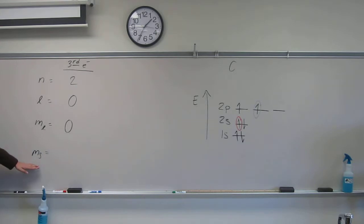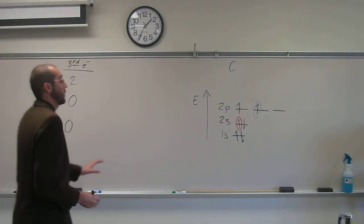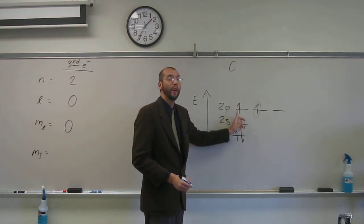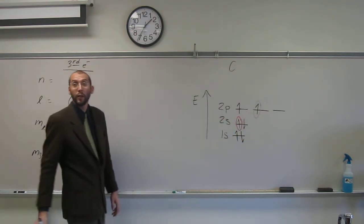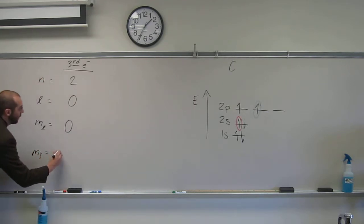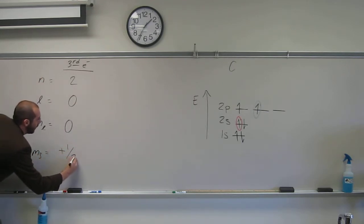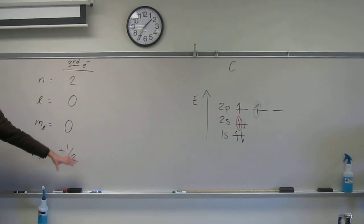So remember, typically we describe the first electron going in the orbital as plus 1 half. So in this case, this was the first electron to go in that orbital. It's pointed up as well, so we'll call that plus 1 half. So that's for the third electron.